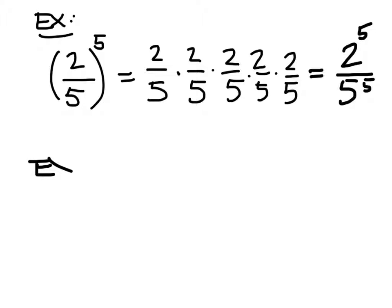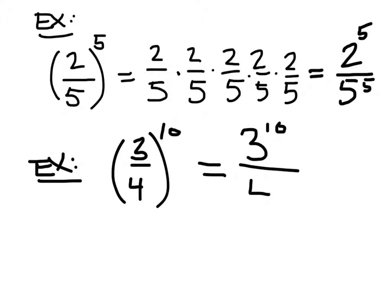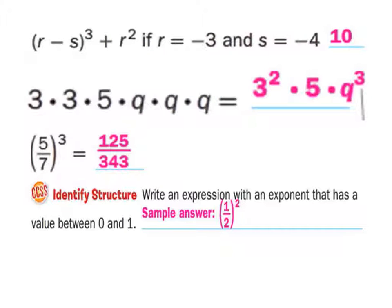So let's look at another example. Something like, three-fourths to the tenth power, okay? If you saw something like this, you could just figure out three to the power of ten, divided by four to the power of ten, okay? In other words, the ten is distributed, essentially, to both the numerator and denominator. No, you do not.